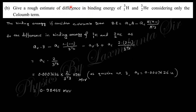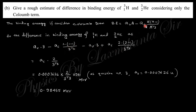The next part asks for a rough estimate of the difference in binding energy of tritium (A=3, Z=1) and helium-3 (A=3, Z=2), considering the Coulomb term only. The binding energy contributions from the symmetry term, pairing term, and surface term are all neglected. Considering only the Coulomb contribution, the difference in binding energy is proportional to a_C × Z(Z−1) / A^(1/3). For hydrogen Z=1 and for helium Z=2 are substituted, giving the final numerical result.